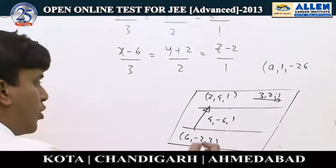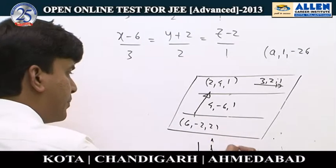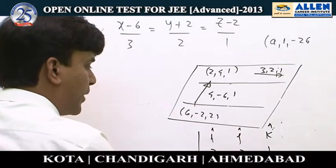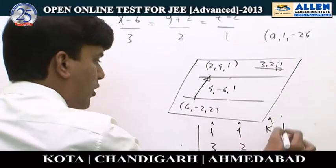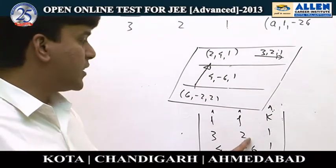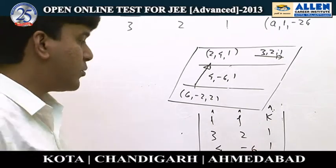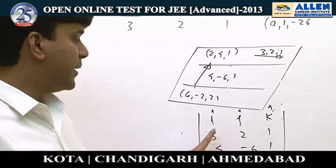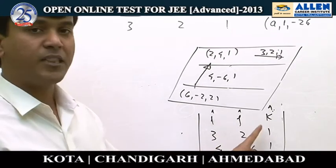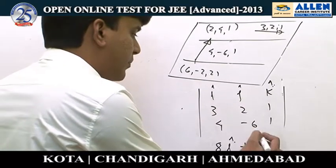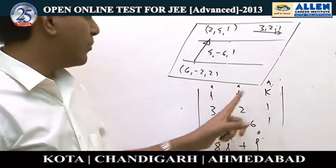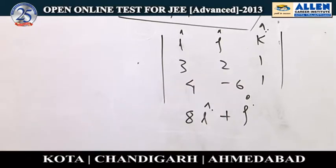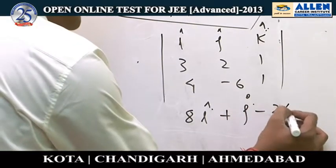The normal to the plane is the cross product of these two vectors. So we compute the determinant with i, j, k in the first row; (3, 1, 1) in the second; and (4, −6, 1) in the third. Expanding: i component is (1×1 − 1×(−6)) = 2 + 6 = 8î; j component is −(3×1 − 1×4) = −(3−4) = +1ĵ; k component is (3×(−6) − 1×4) = −18 − 8 = −26k̂.